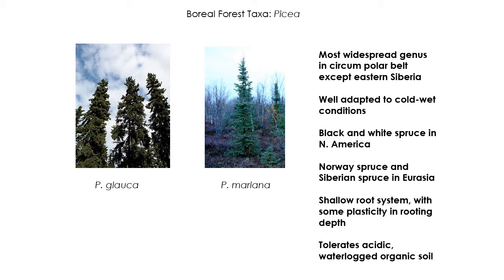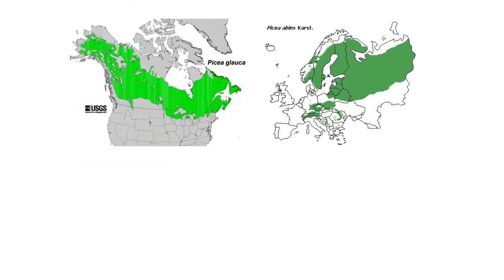Black spruce, Picea mariana, is really well adapted to waterlogged soils, and you'll find them in the wettest parts of the boreal forest — you find them in bogs. Picea glauca, white spruce, is distributed all across the boreal zone of North America, from the maritime provinces of Canada all the way up to Alaska. The most widespread and abundant spruce species in Eurasia is Picea abies, or Norway spruce, found from the Alps all the way out into Siberia.